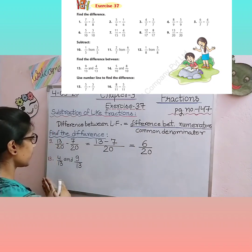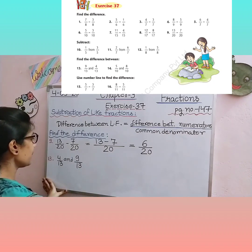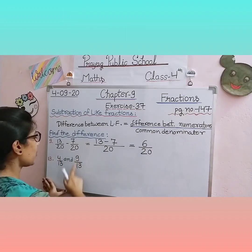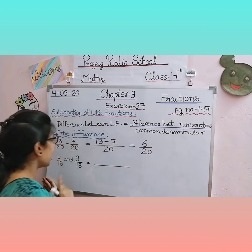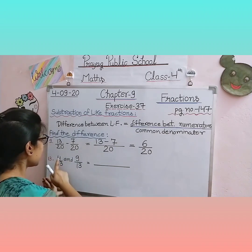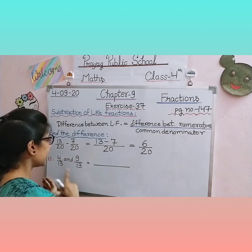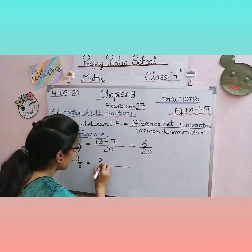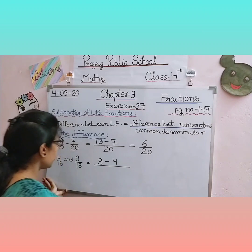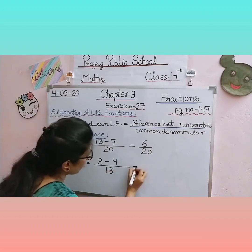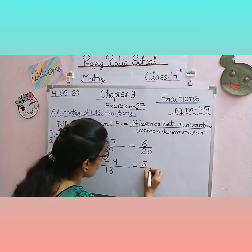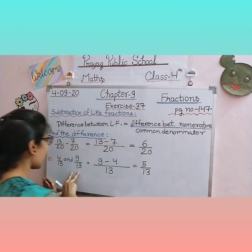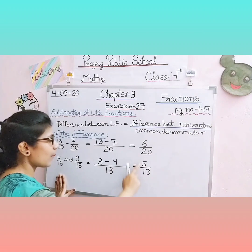Next question: find the difference between 4/13 and 9/13. Ye do fractions hain. Ab hum isse formula pe based arrange karenge. Aapko pata hai hum bade number mein se chote number ko subtract karte hain, isliye hum 4 minus 9 nahi likhenge — hum 9 minus 4 likhenge. Common denominator 13 rahega. 9 minus 4 = 5. Answer: 5 upon 13.